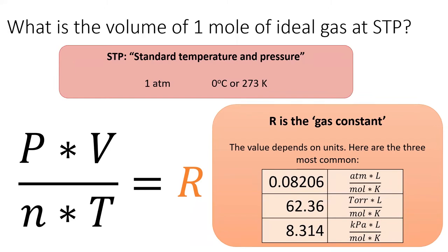Let's put this into practice. Calculate the volume of an ideal gas at STP. STP stands for Standard Temperature and Pressure, which is defined as one atmosphere of pressure and zero degrees Celsius. Pause the video and try to calculate volume.